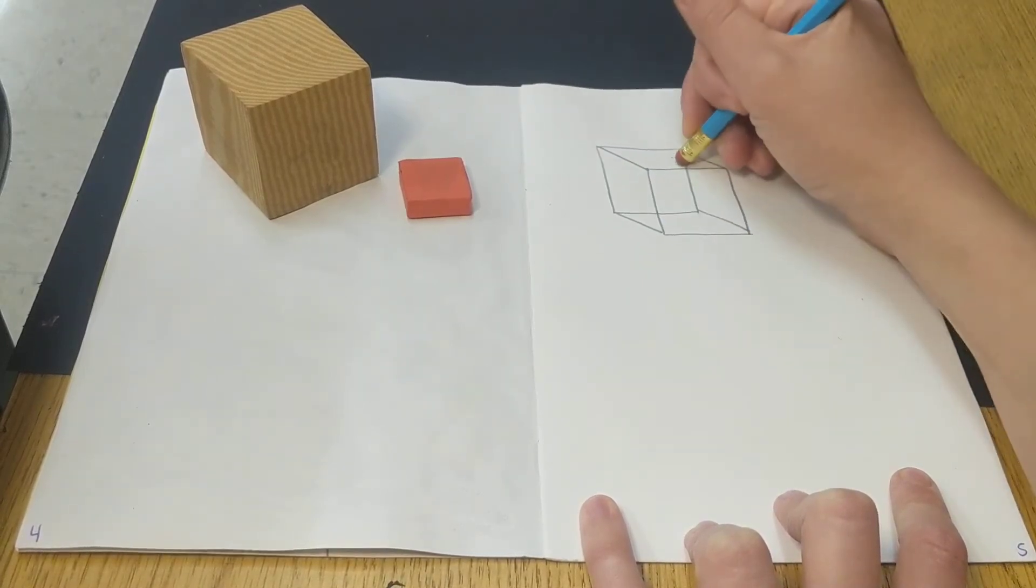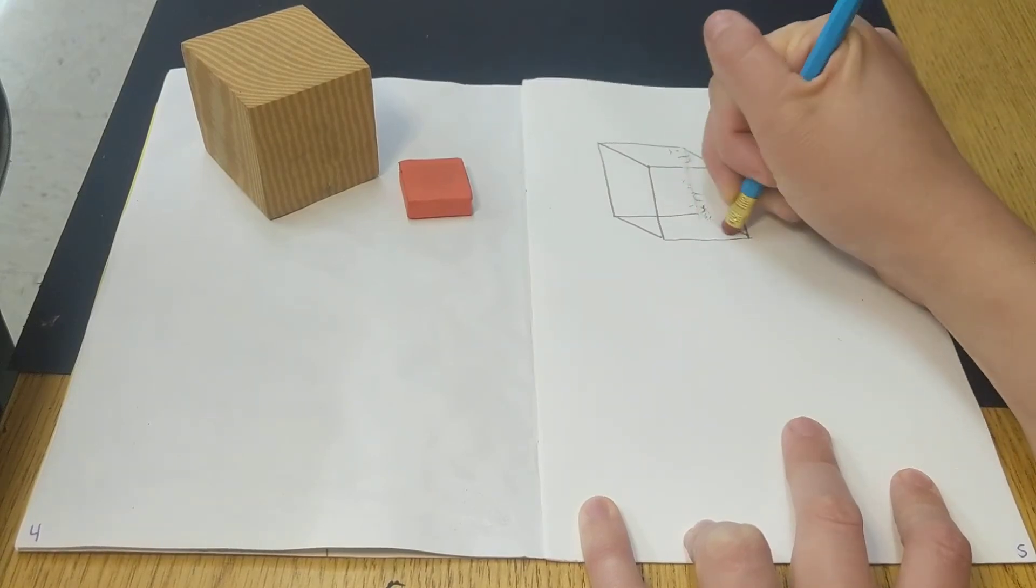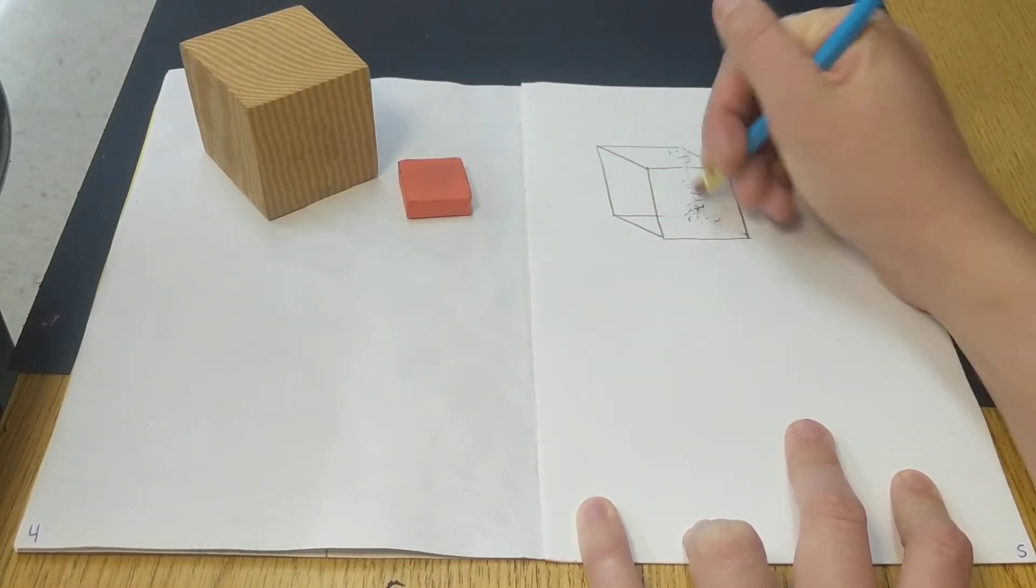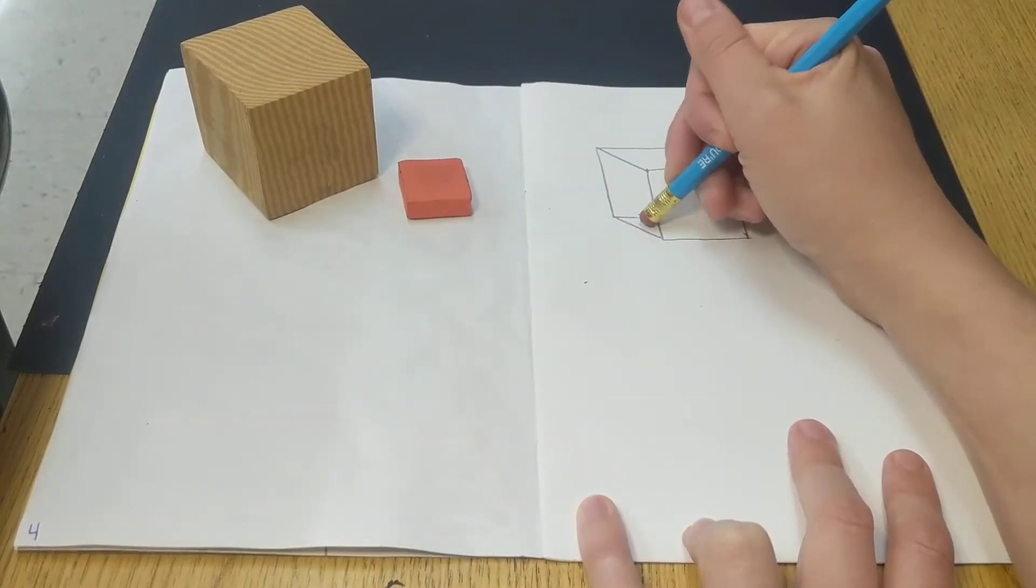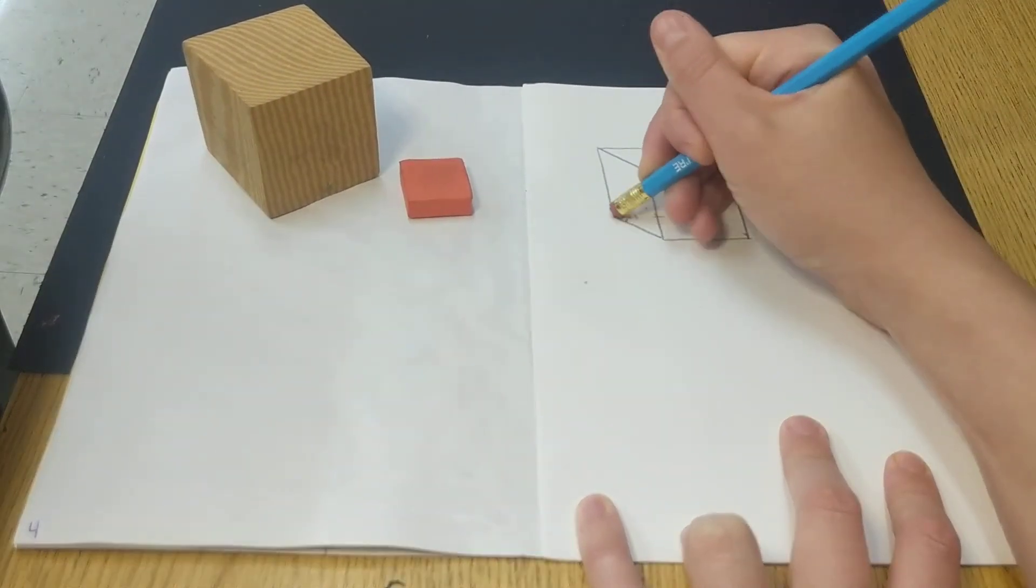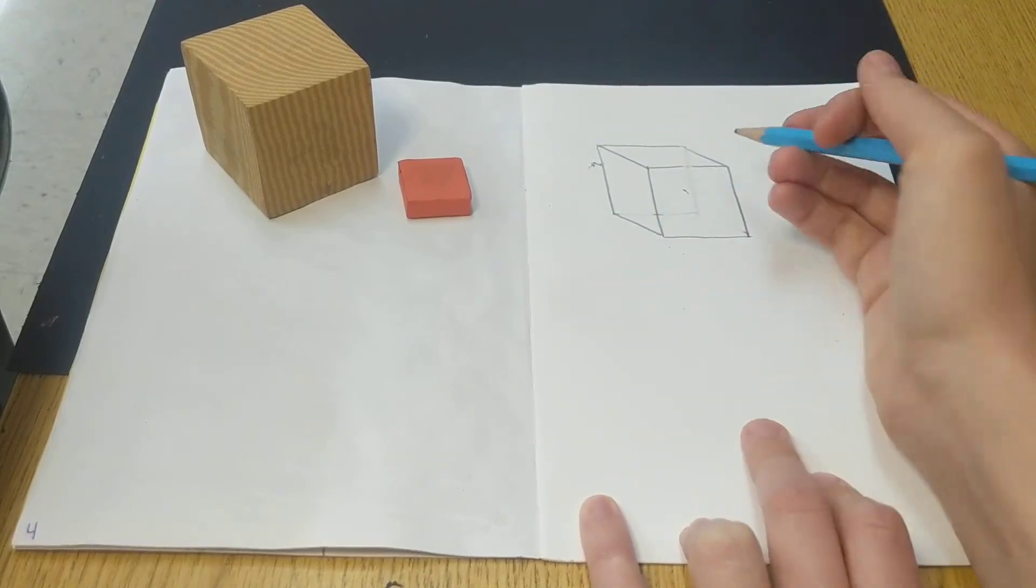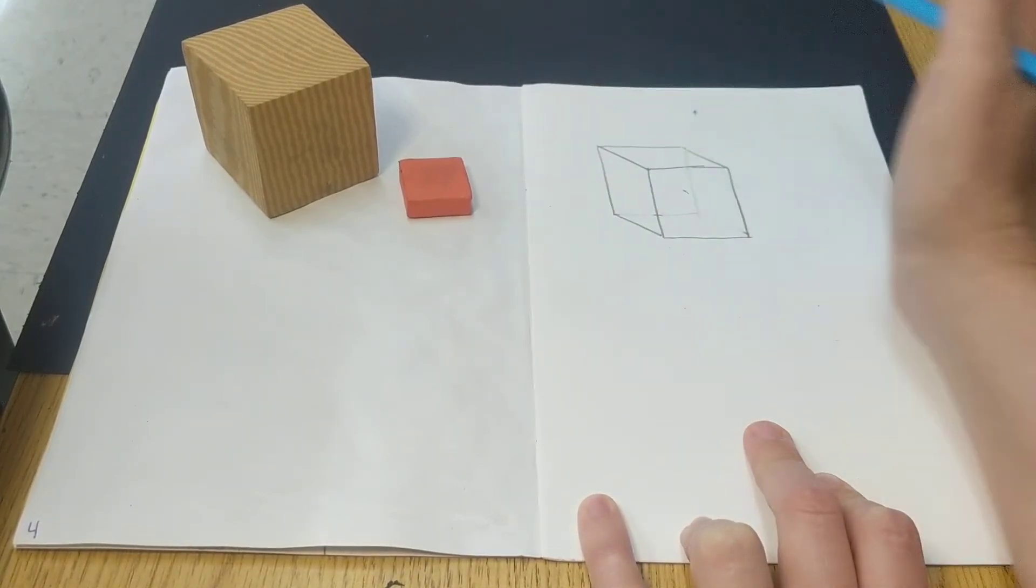And if you do it like this, you can erase these extra lines that you can't see. If we're looking at the cube, we can only see the faces. We don't actually see the lines behind it. And this would give you the shape of the cube.